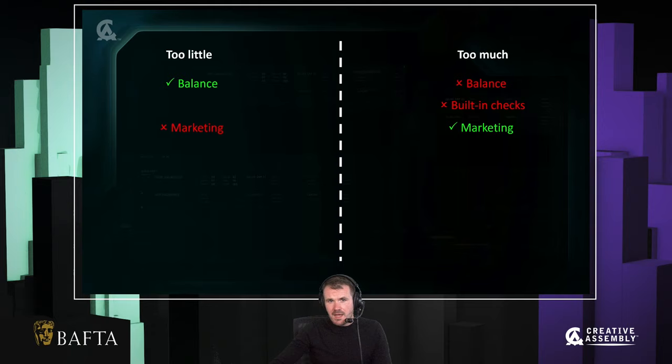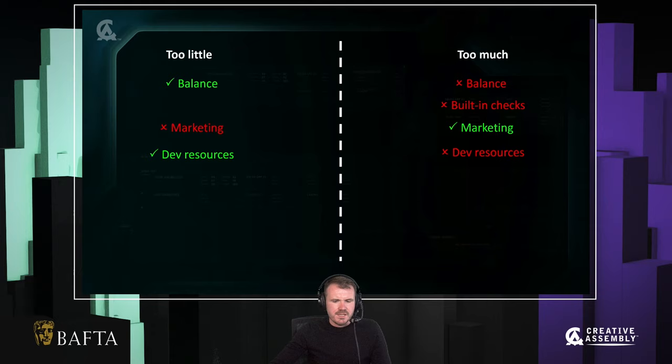Marketing: if your game is selling itself based on its asymmetry, the more asymmetry you do, the better it's going to look in traditional marketing — people are going to see all the asymmetry and think the game looks exciting. Development resources: it's clear that the more asymmetry you do, the more time and money it's going to cost, and that's going to take away from other areas of the game.